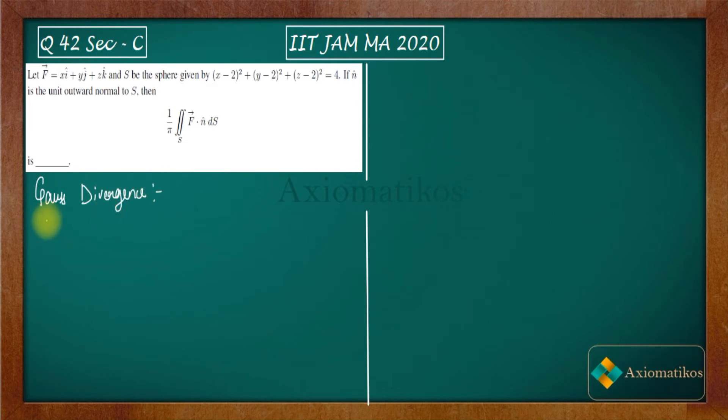Gauss divergence theorem actually tells us that if S is a closed surface, the main point is that your surface should be closed. Now in your case, you have a sphere which is a closed surface. That is why I can use this.